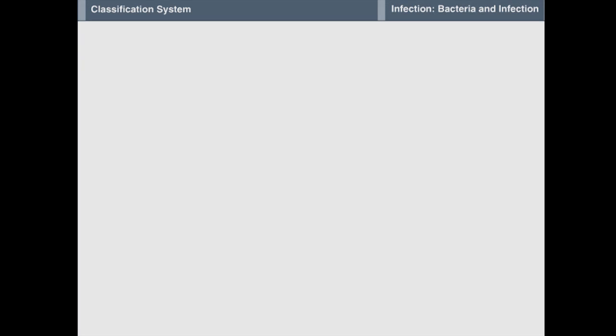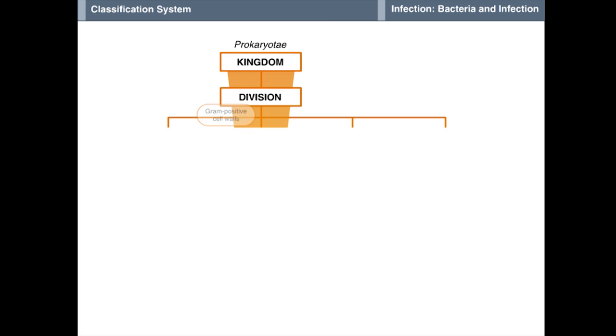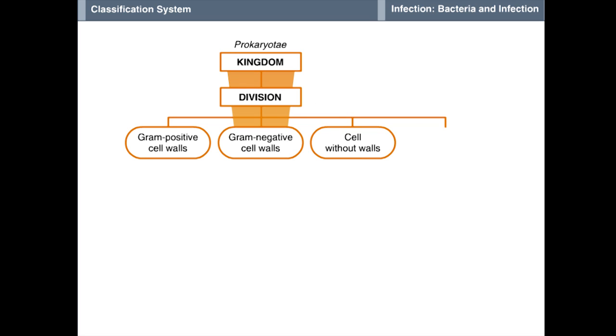Based on differences in the cell wall structure, the kingdom prokaryotae is divided into four divisions: gram-positive cell walls, gram-negative cell walls, cells without walls, and cells with unusual walls.